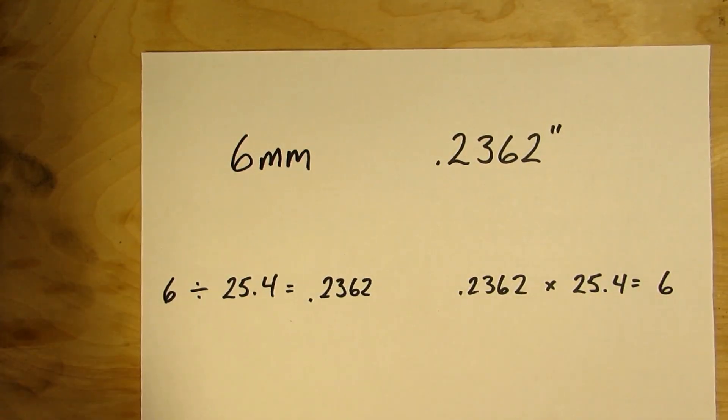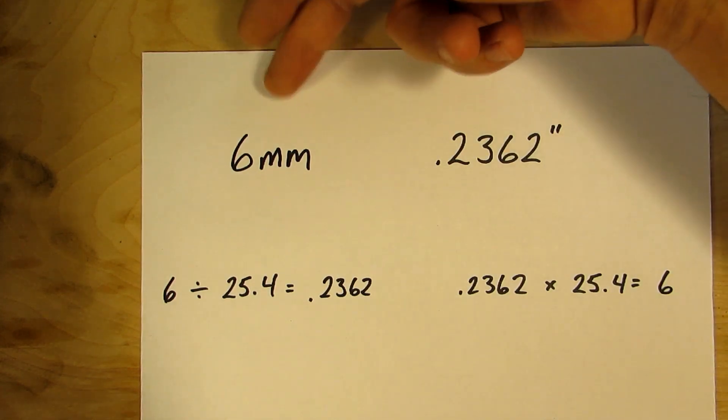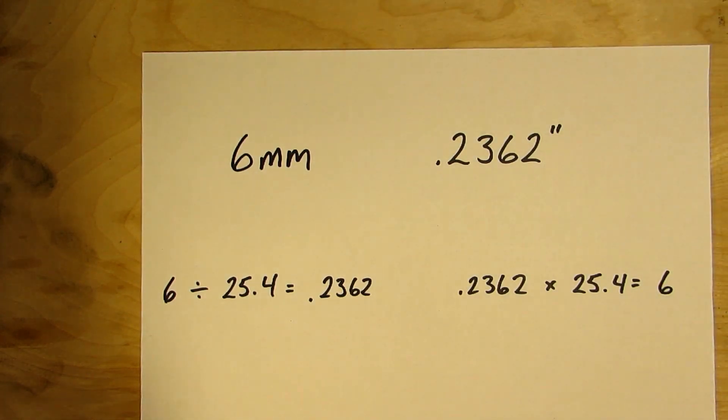So these two numbers, these are the exact same size. Six millimeters is 0.2362. There's a bunch of other decimal places that go on, but like I said round it up to the fourth decimal place.